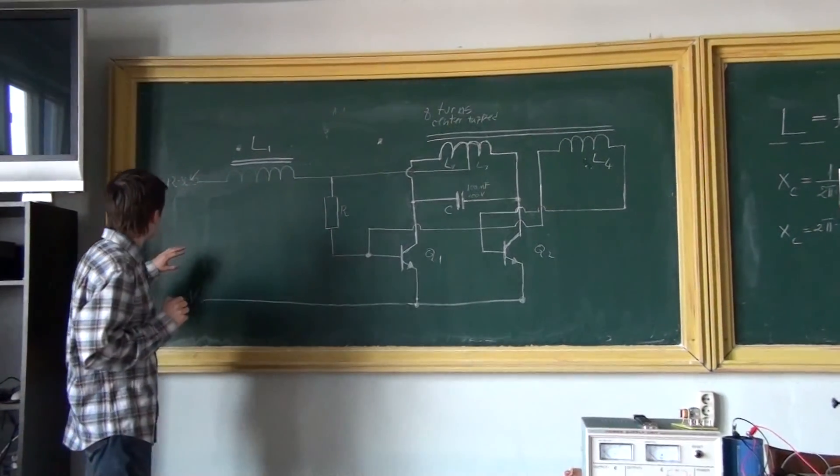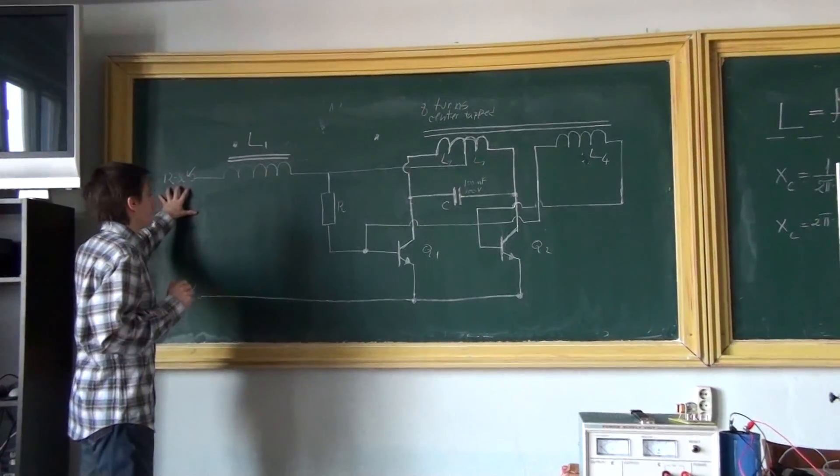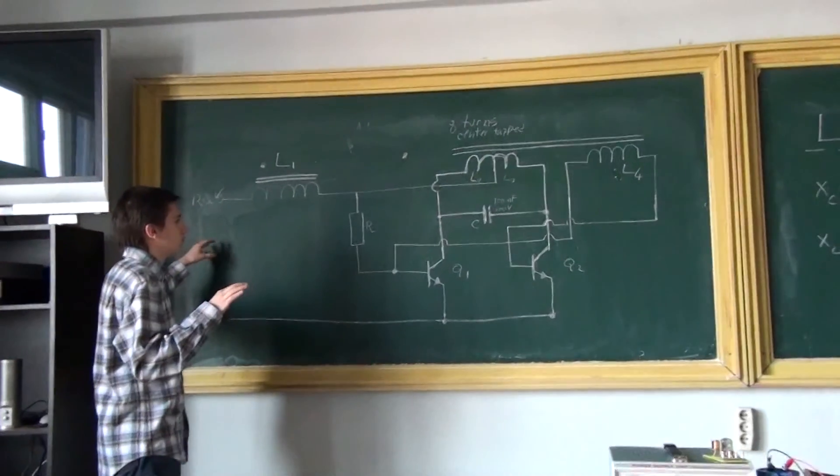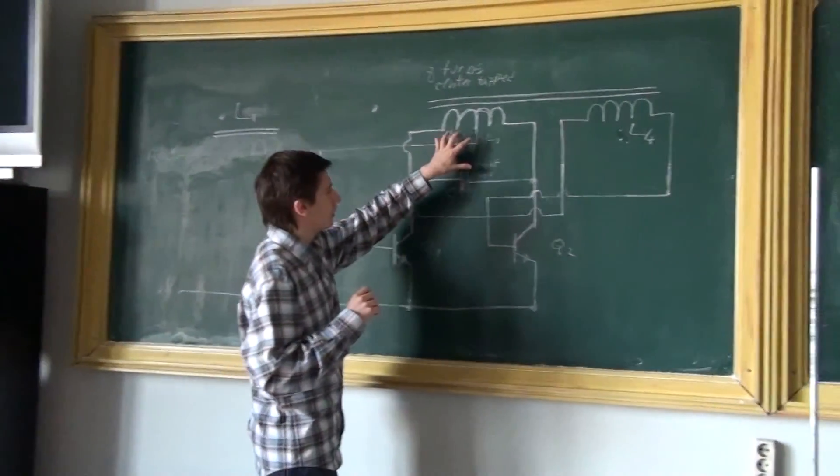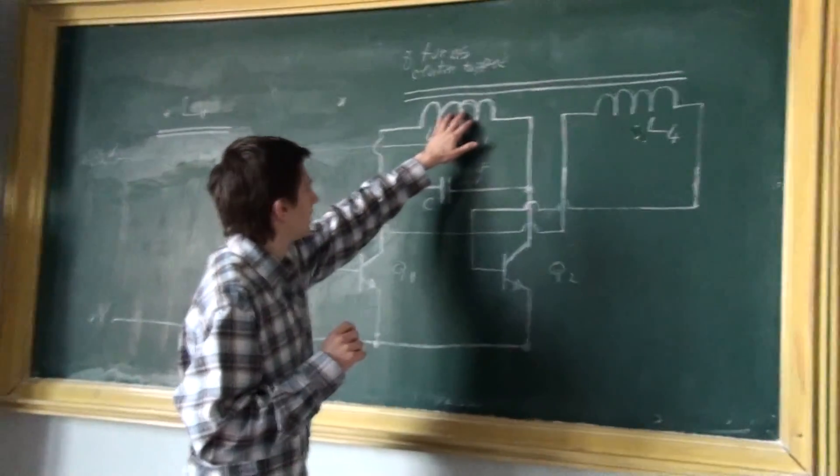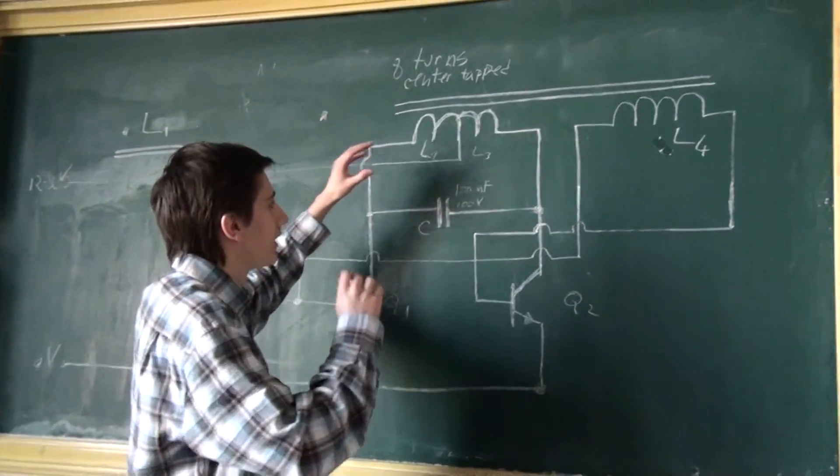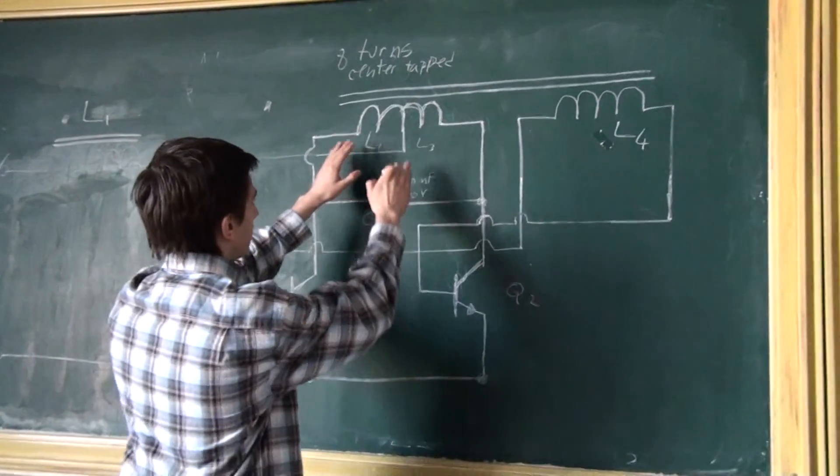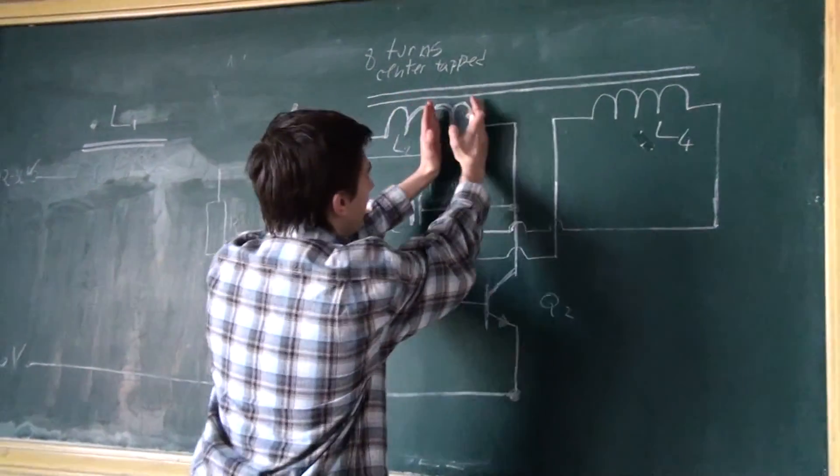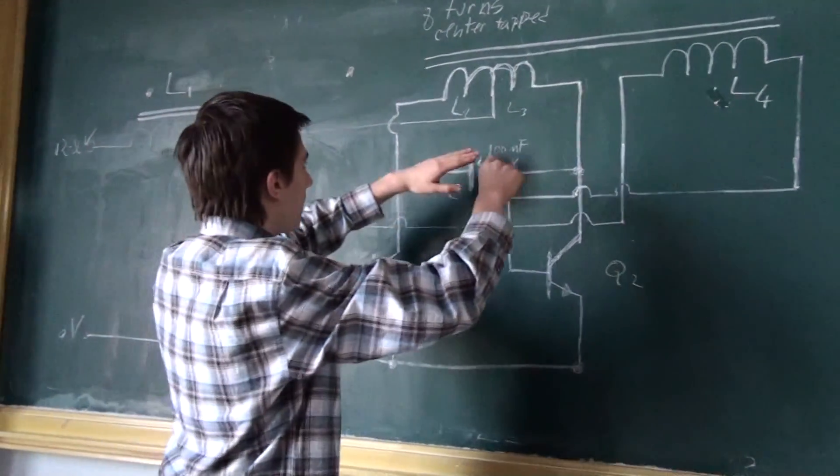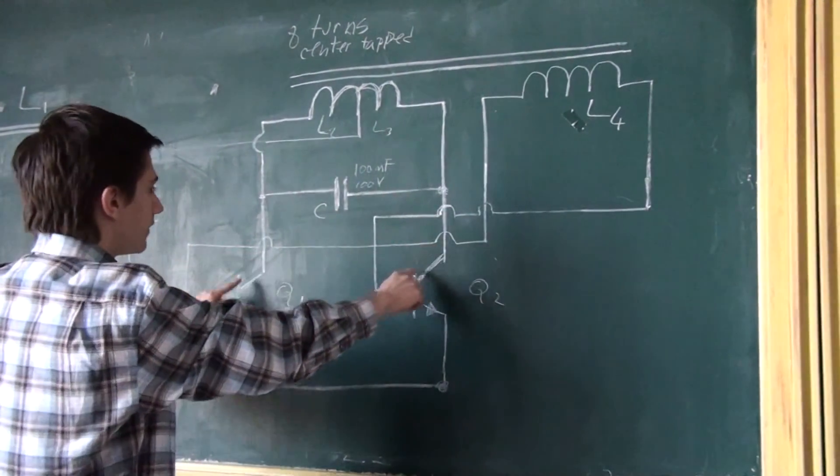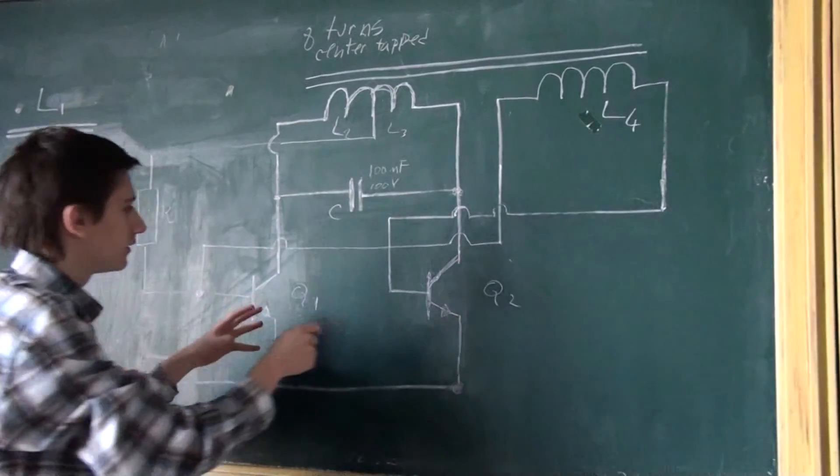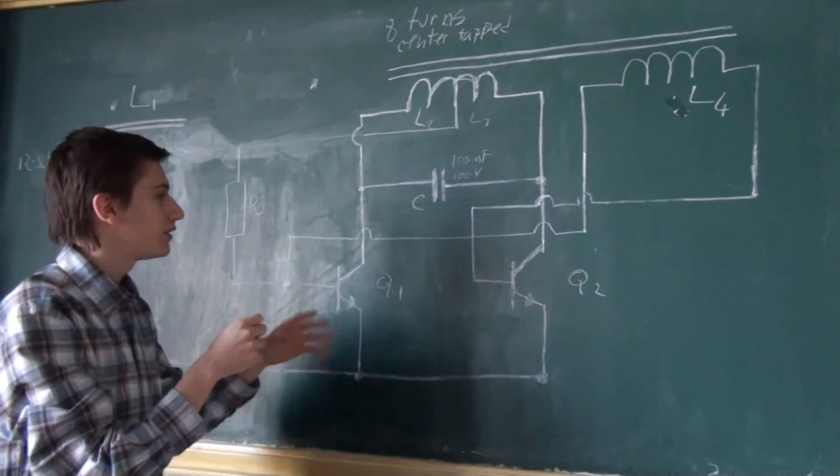First, we have the DC source, which is somewhere around 12 volts. The current flows through the primary coil of the transformer, which are eight turns center tap. There are two coils, this part and the other one. The current will flow through the transistors, but one of them will be activated sooner than the other.